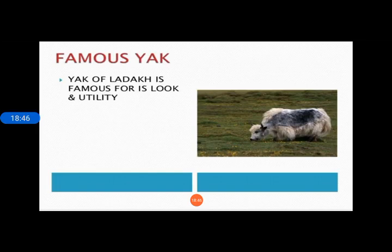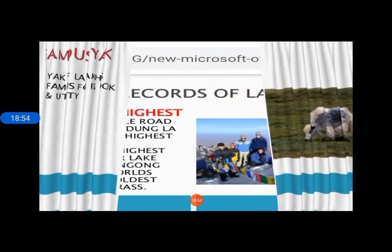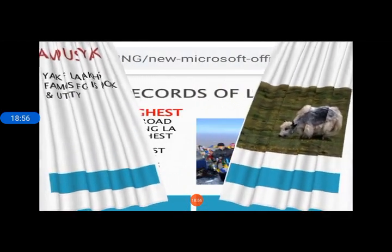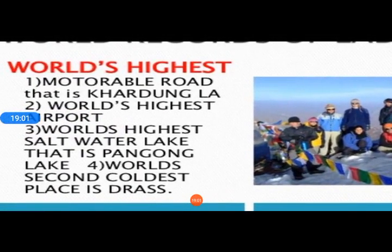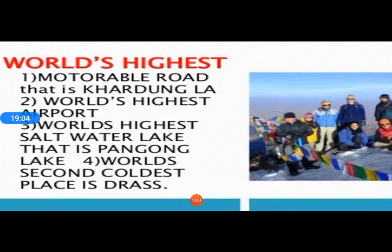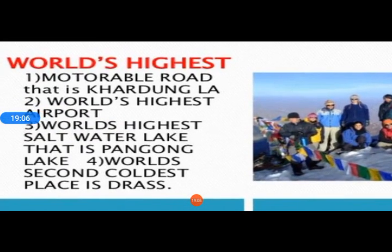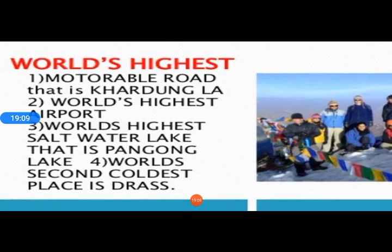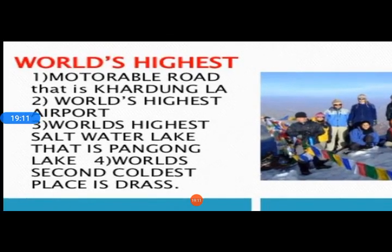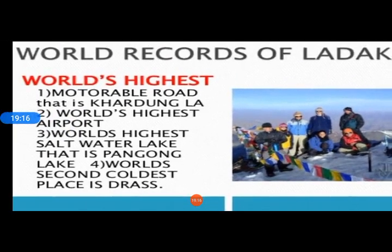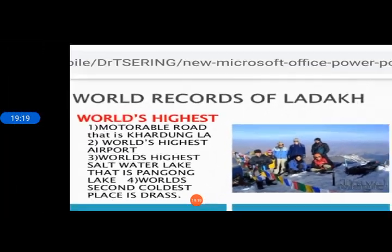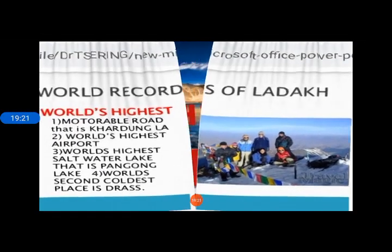The yak is a very important and famous animal of Ladakh, used by people in agriculture. Ladakh has several world records: the world's highest motorable road at Khardung La pass, the world's highest saltwater lake at Pangong lake, and the world's second coldest place at Dras — these are the amazing facts of Ladakh.